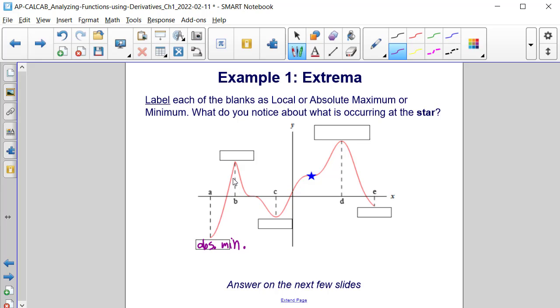Now let's look at b. Notice to the left of b we have slopes that are positive, and to the right we have slopes that are negative. This yields a local maximum.